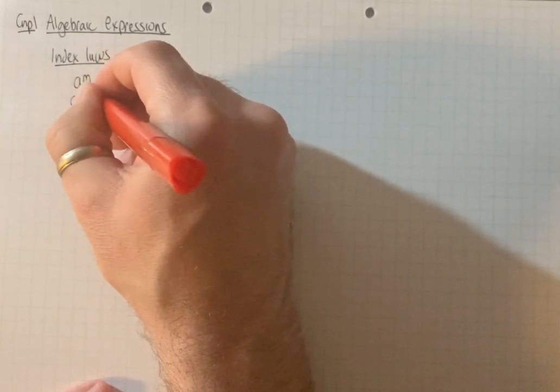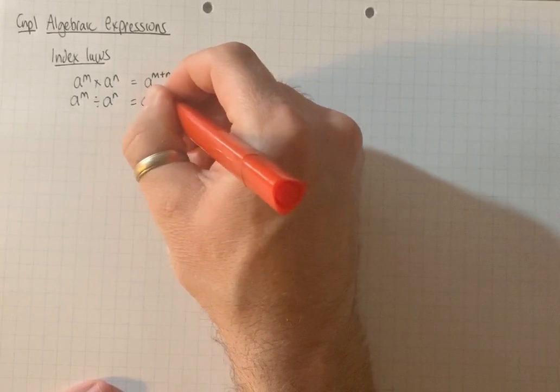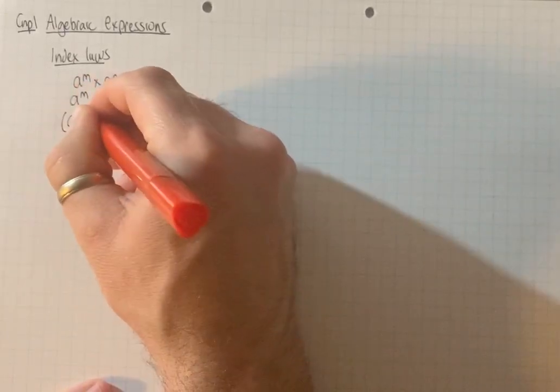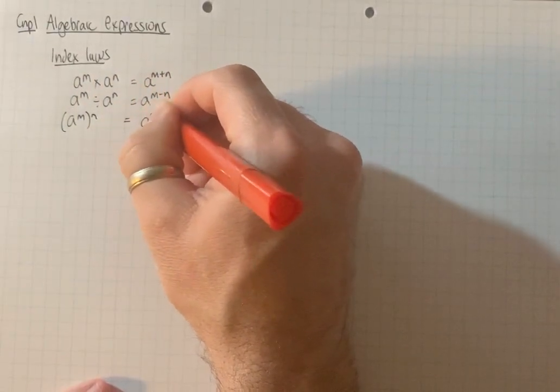The Division Rule is very similar. If you have the same base with powers dividing, you just subtract those powers. If you've got the powers separated by brackets, you can just remove the brackets by multiplying the powers.